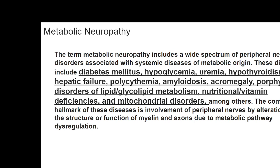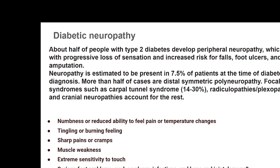Among metabolic neuropathies, the most common conditions are diabetes mellitus, persistent hypoglycemia, uremia, hypothyroidism, hepatic failure, amyloidosis, acromegaly, porphyria, glycolipid metabolism disorders, nutritional vitamin deficiencies, and mitochondrial disorders. From our clinical interest, we will limit ourselves to diabetes mellitus and nutritional deficiency conditions, as the others would be too extensive to cover here.